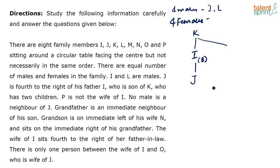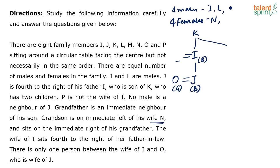Grandson is on the immediate left of his wife N, and sits on the immediate right of his grandfather. So N is a female. Also, O is the wife of J, meaning O is a girl and J is confirmed as a boy — so the 3rd boy in the group is J. Now, there is one more grandchild — a grandson whose wife is N. We don't know who he is yet.